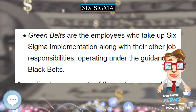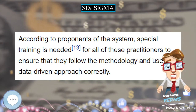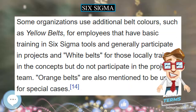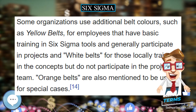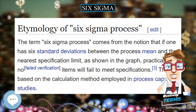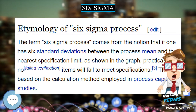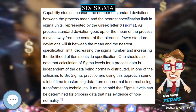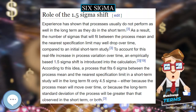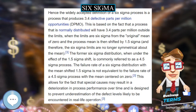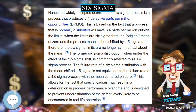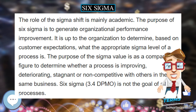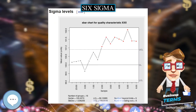As a result of this goal, it is incumbent on management to prioritize areas of improvement. Six Sigma was registered June 11, 1991 as US Service Mark 1,647,704. In 2005, Motorola attributed over US$17 billion in savings to Six Sigma. Other early adopters include Honeywell and General Electric, where Jack Welch introduced the method. By the late 1990s, about two-thirds of the Fortune 500 organizations had begun Six Sigma initiatives with the aim of reducing costs and improving quality.